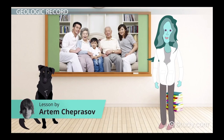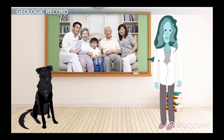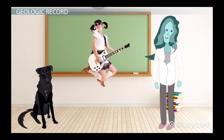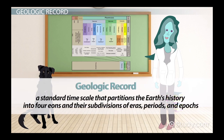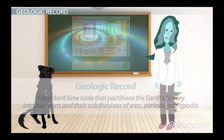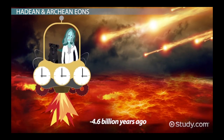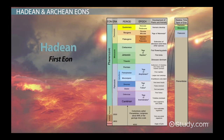Your life can be divided into major stages like childhood, adult years, and later years — and each stage can be divided further. Geologists have done something similar with Earth's history, creating the geologic record: a standard timescale partitioning Earth's history into four eons and their subdivisions of eras, periods, and epochs. The first eon, called the Hadean, lasted from the origin of the Earth roughly 4.6 billion years ago and ended about 4 billion years ago.